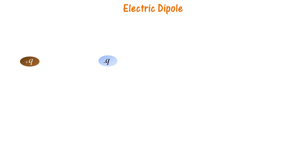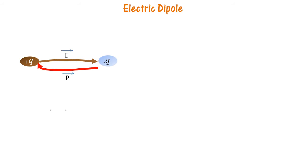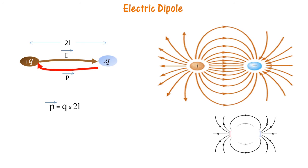Electric dipoles are a pair of point charges — a positive point charge and a negative point charge. The electric field lines are shown coming out of plus Q and going into minus Q, so cumulatively the electric field lines go from plus Q to minus Q. The electric dipole moment is shown in the direction of minus Q to plus Q by convention. We would have seen electric field lines drawn around the dipole, which are very similar to the magnetic field lines, and we will understand what these electric field lines signify.